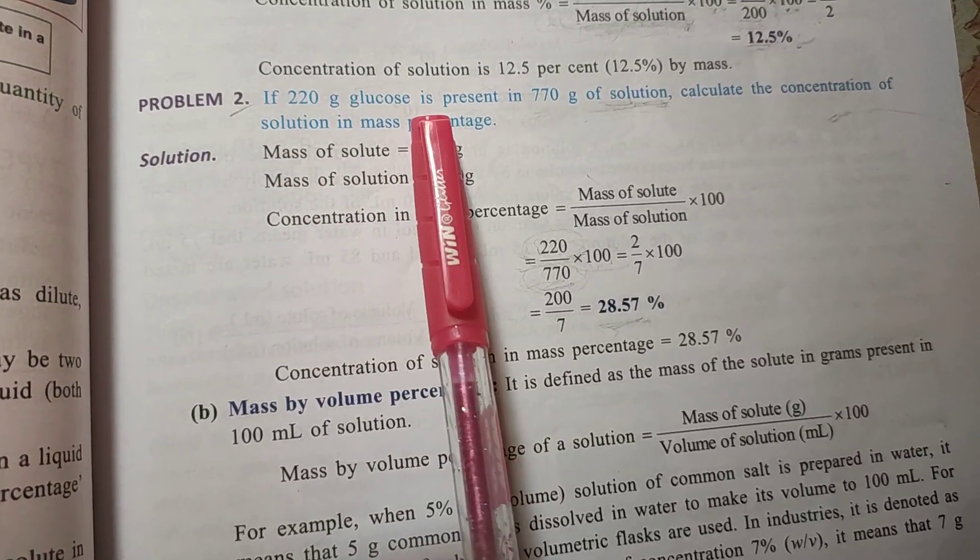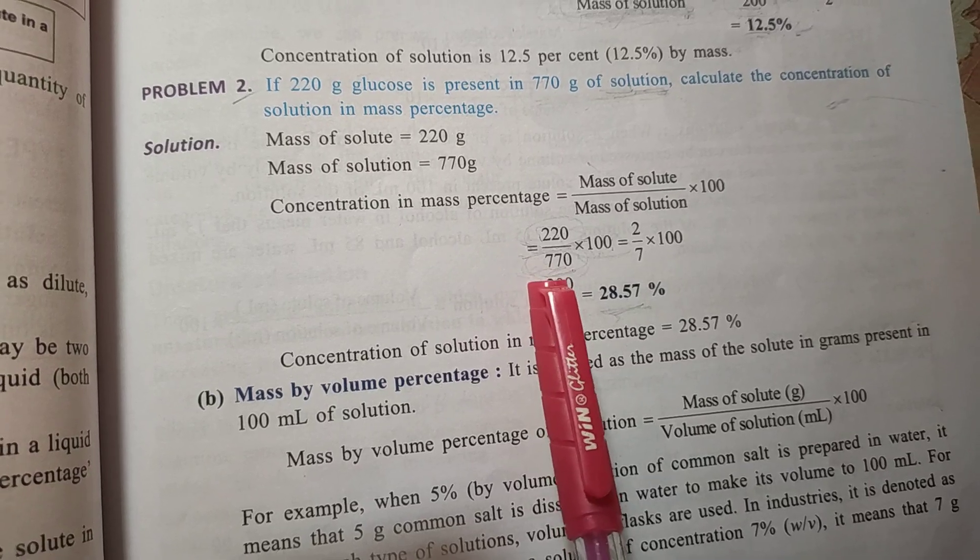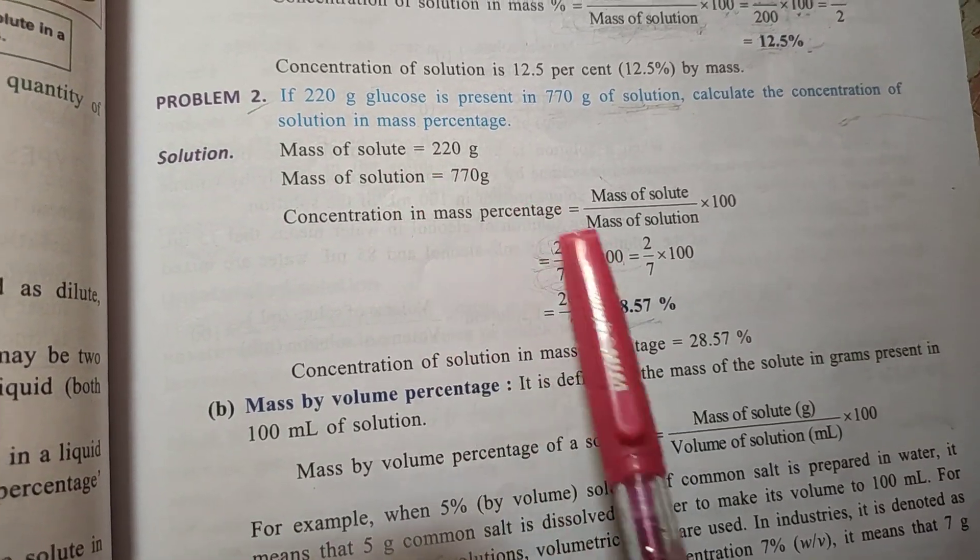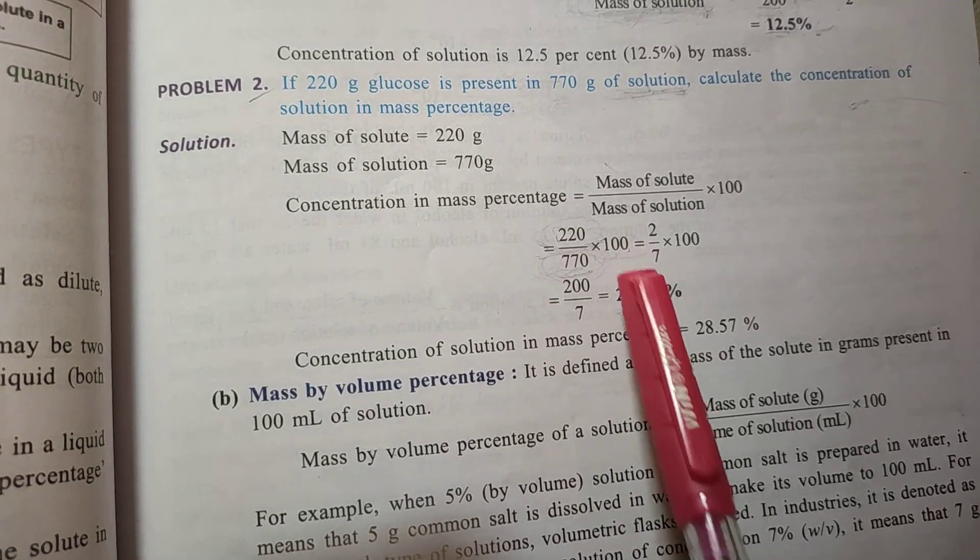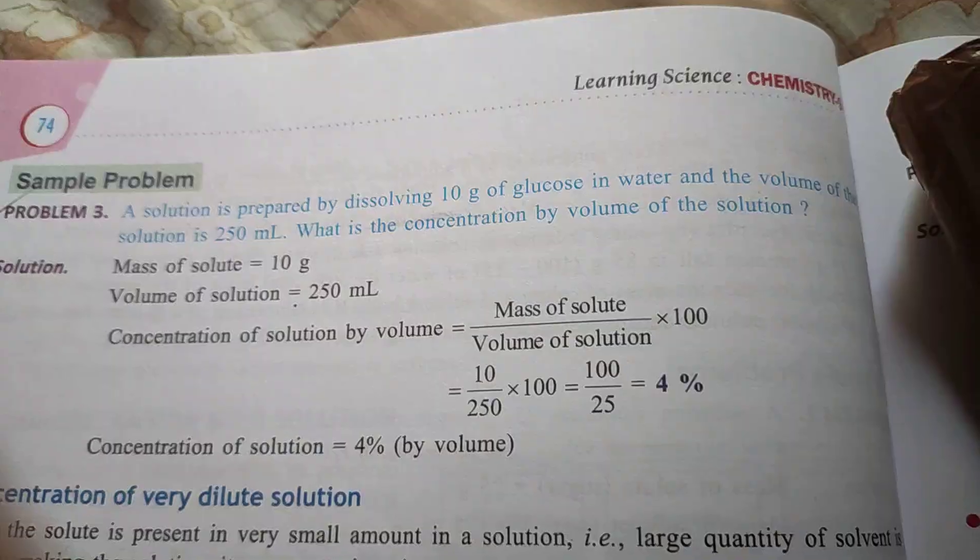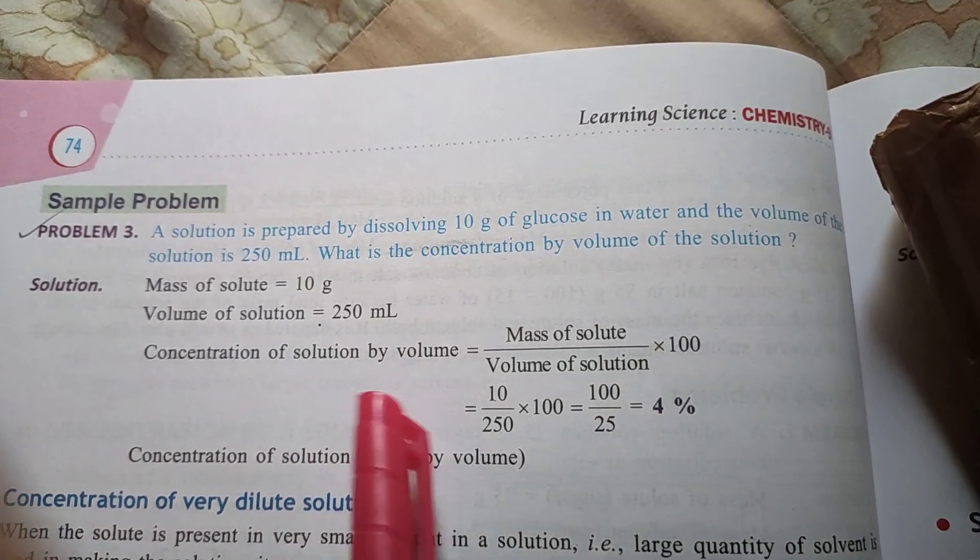So we will directly put here 770 and we will write the amount of solute, 220, and multiply 100. The answer is 28.57%. Next question.